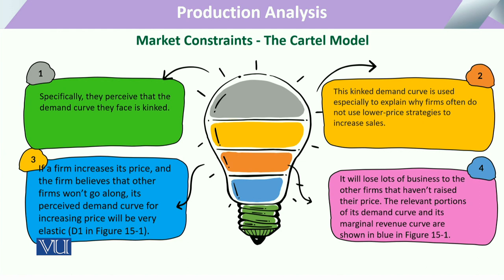The phenomenon of sticky prices is one factor, but not the only reason we have informal collusion. The kinked demand curve tells us that the firms do not use lower price strategies to increase sales. If there are two, three, or four firms producing a similar nature of output, and the demand curve is elastic, then a small change in price will lead to more sales.